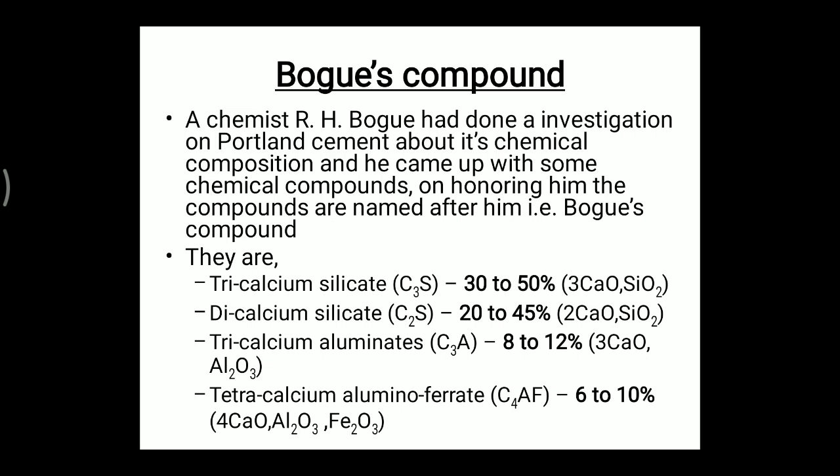The Bogue compounds are: tri-calcium silicate (C3S), present at 30 to 50 percent, with formula 3CaO·SiO₂; di-calcium silicate (C2S), 20 to 45 percent, formula 2CaO·SiO₂; tri-calcium aluminate (C3A), 8 to 12 percent, formula 3CaO·Al₂O₃; and tetra-calcium alumino-ferrite (C4AF), 6 to 10 percent of total mass, with formula 4CaO·Al₂O₃·Fe₂O₃.